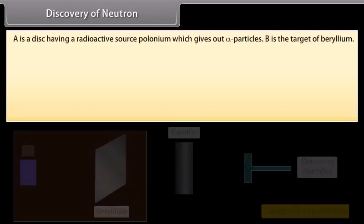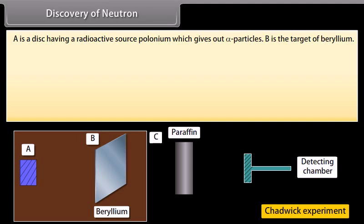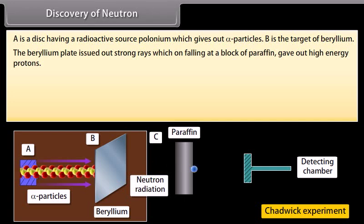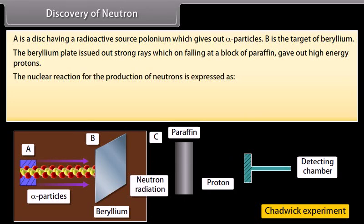Discovery of neutron. A is a disk having a radioactive source polonium which gives out alpha particles. B is the target of beryllium. Both A and B are placed in an evacuated chamber C. The beryllium plate issued out strong rays which on falling at a block of paraffin gave out high energy protons. The nuclear reaction for the production of neutrons is expressed as.